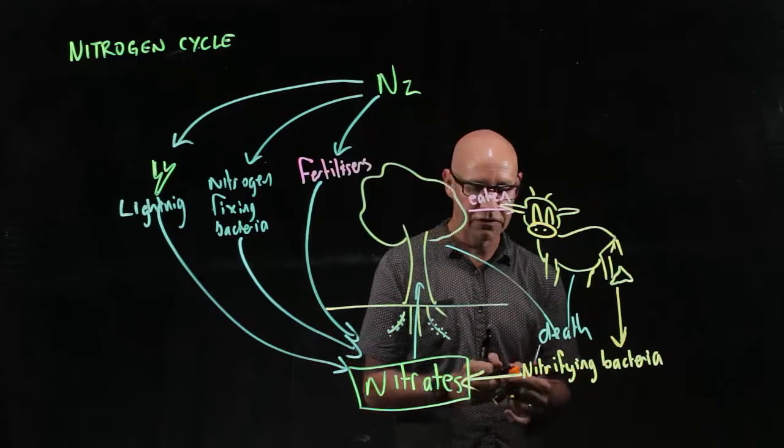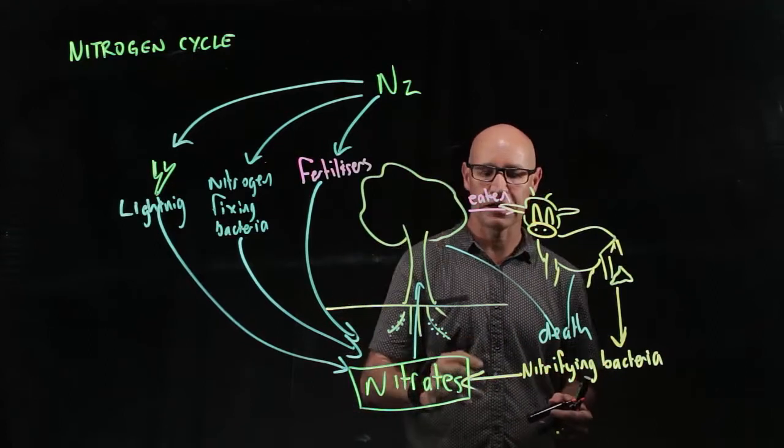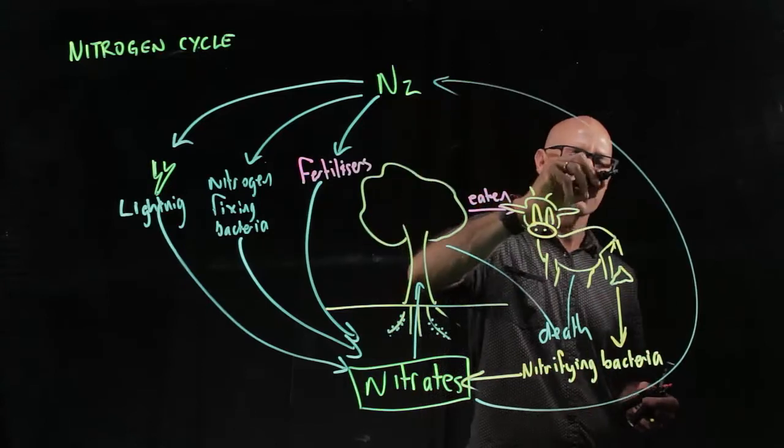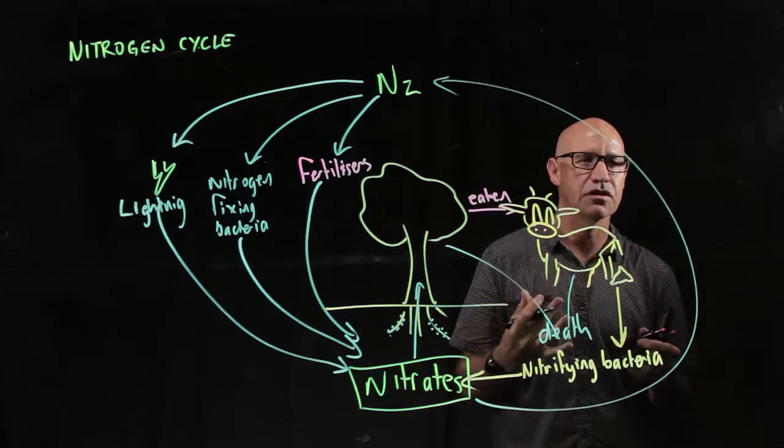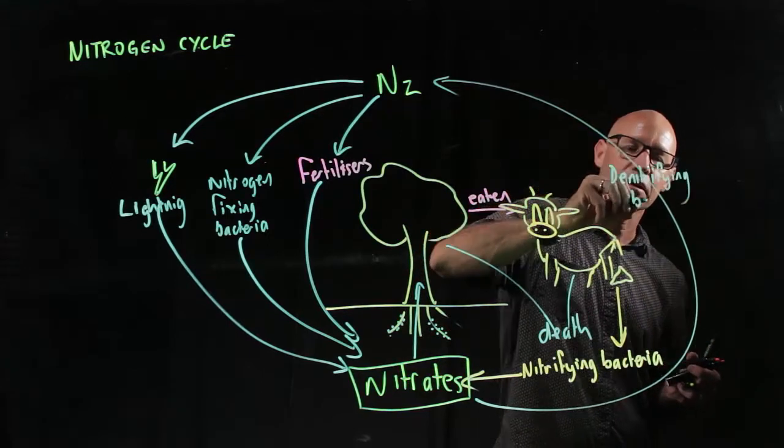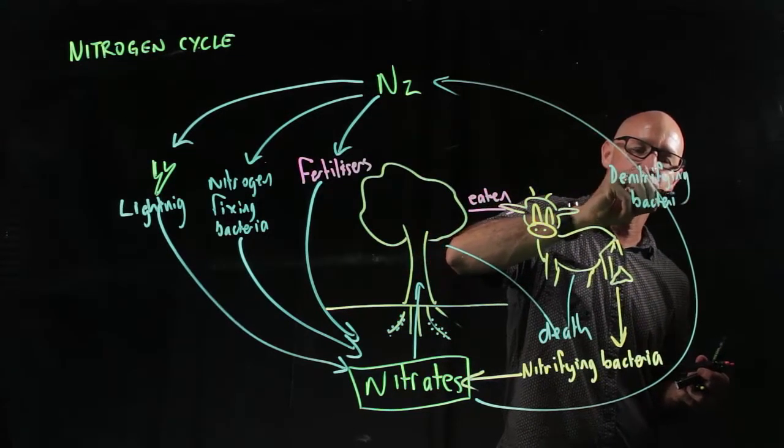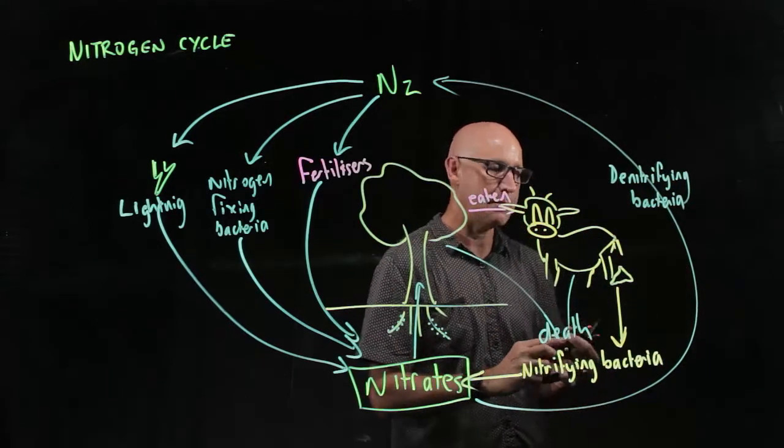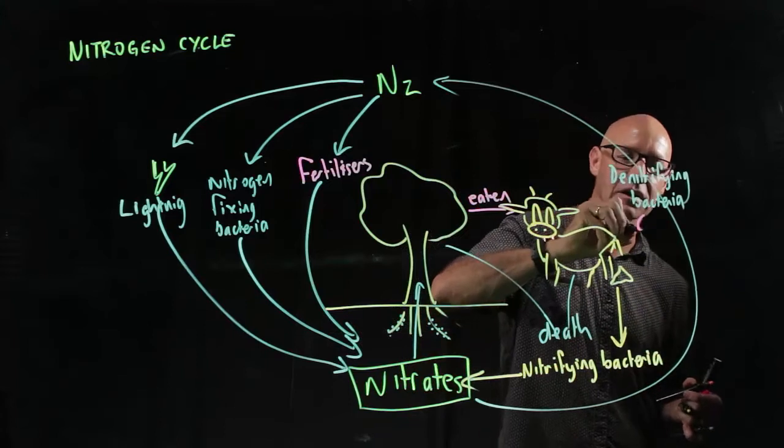Now there is actually a process that puts nitrogen back into the atmosphere and that is through conditions that are anaerobic and we have denitrifying bacteria. So they do the opposite, they actually put nitrogen back into the atmosphere and that happens when we've got anaerobic conditions.